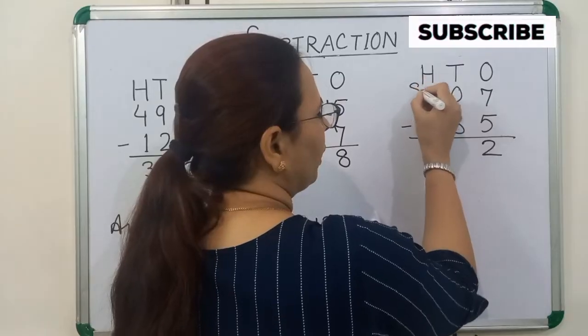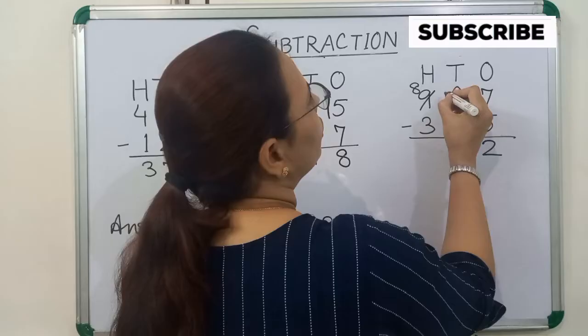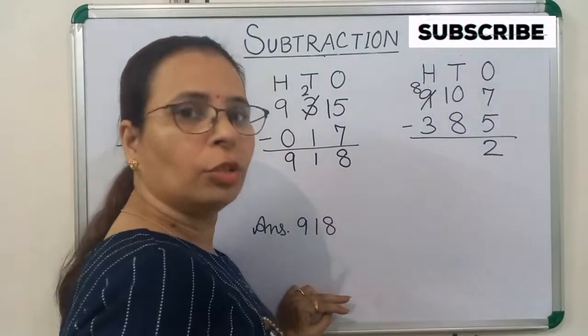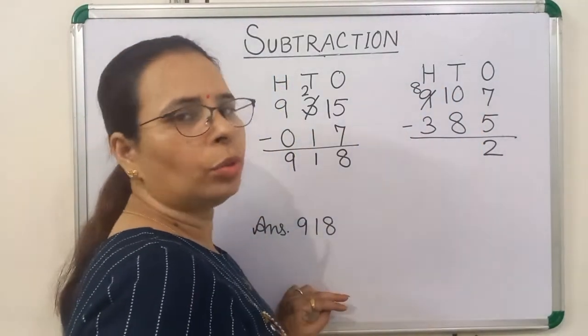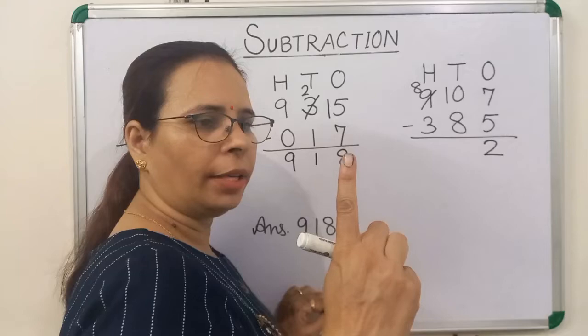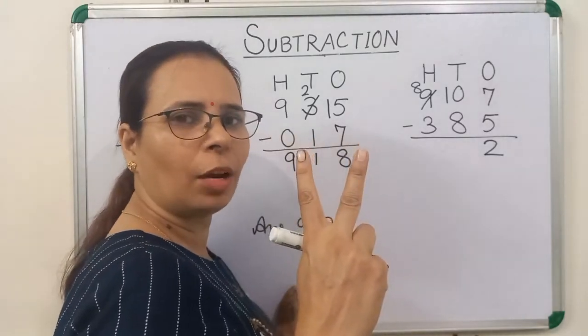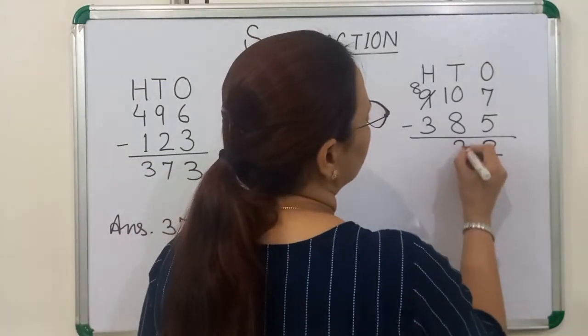9 becomes 8 and 0 becomes 10. So now we will subtract 8 from 10. Count what comes after 8? 9, 10. How many fingers are out? 2. So we will write here 2.